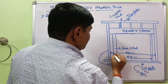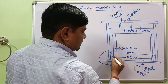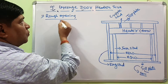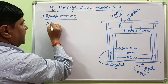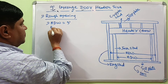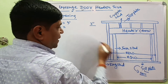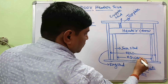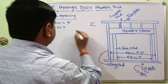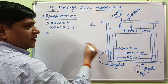Rough opening width means actual door width plus the width of the door jamb. For a 9 foot garage door, the actual door width is 9 foot, and the rough opening width will be 3 inches more than the actual door width. So if the actual door width is 9 feet, then the rough opening width will be 9 feet 3 inches.